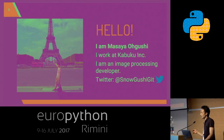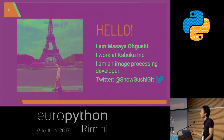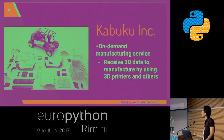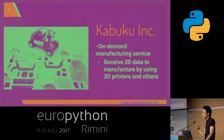This is my self-introduction. My name is Masai Ogsi. I work at Kabuk Inc. as an image processing developer. Kabuk Inc. provides an on-demand manufacturing service — it receives 3D data to manufacture using 3D printers and other methods. That is the reason why I am talking about deep learning applied to 3D objects.